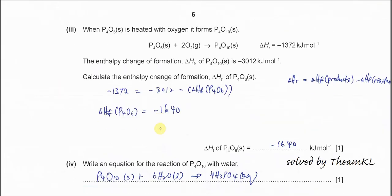Part 3: When P4O6 is heated with oxygen, it forms P4O10 solid, and the enthalpy of the reaction is given, negative 1372. The enthalpy change of formation for P4O10 is also given, negative 3012. Calculate the enthalpy change of formation of P4O6. Very easy, you need to use this equation.